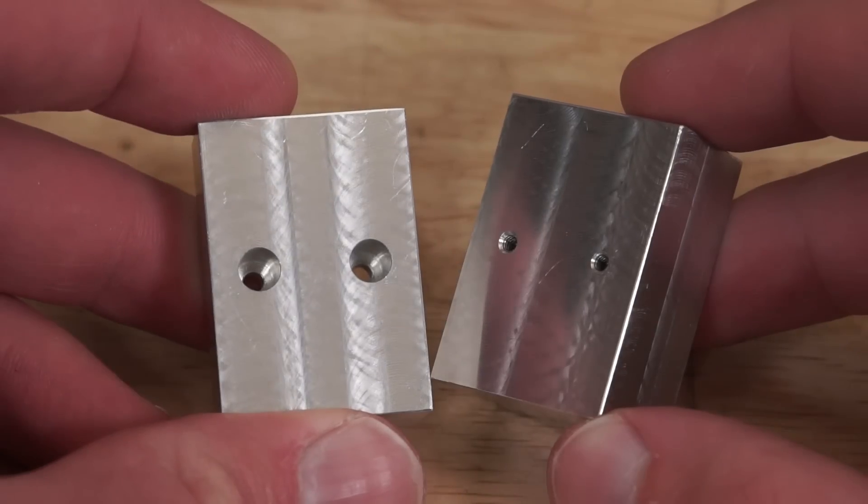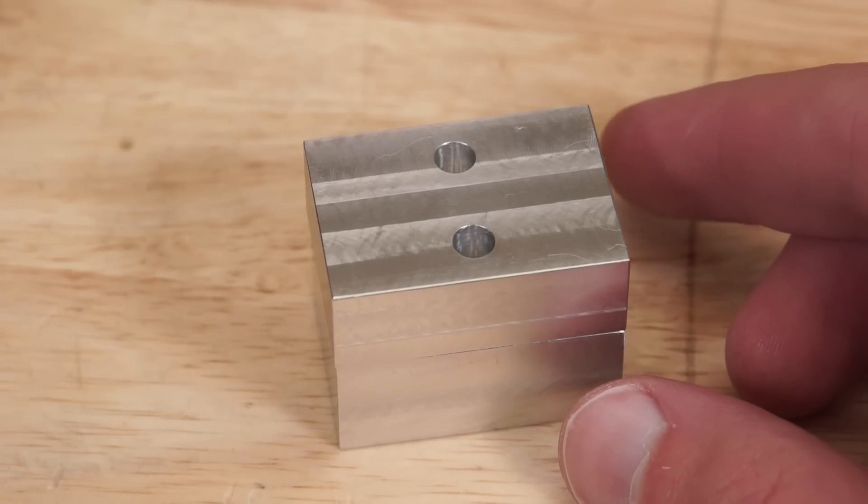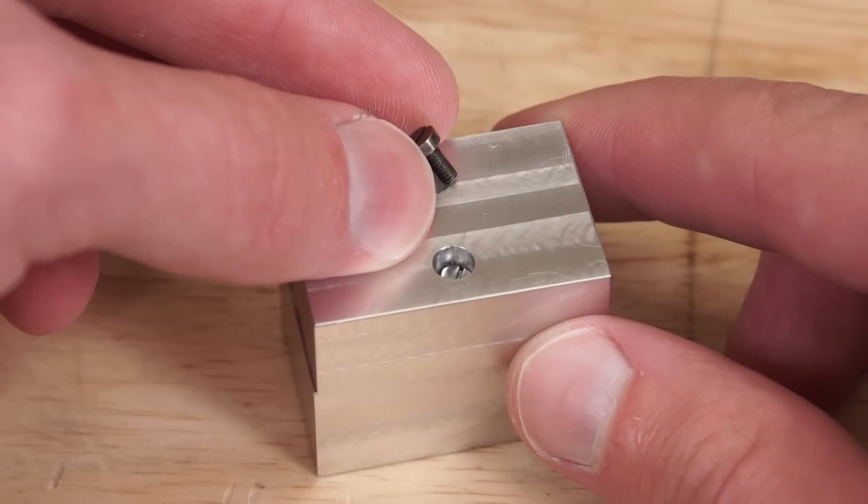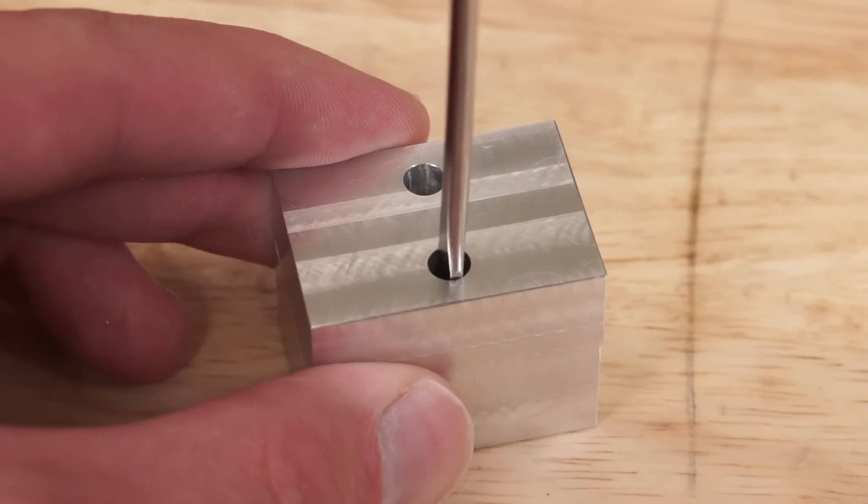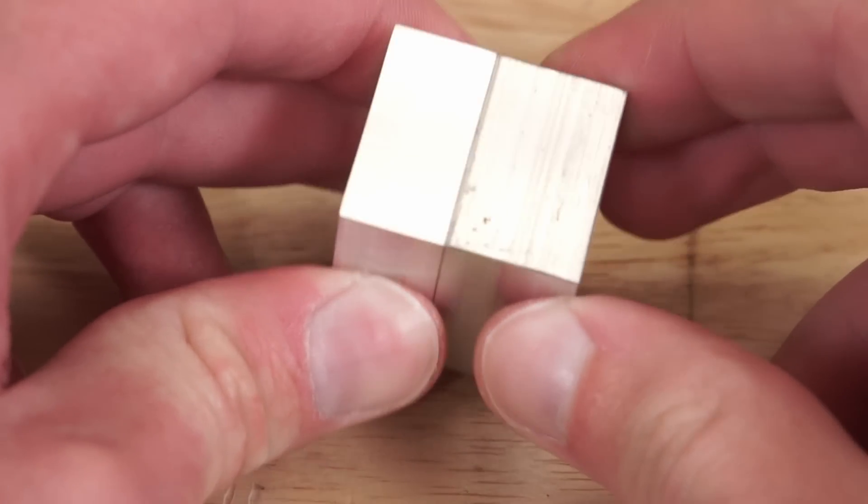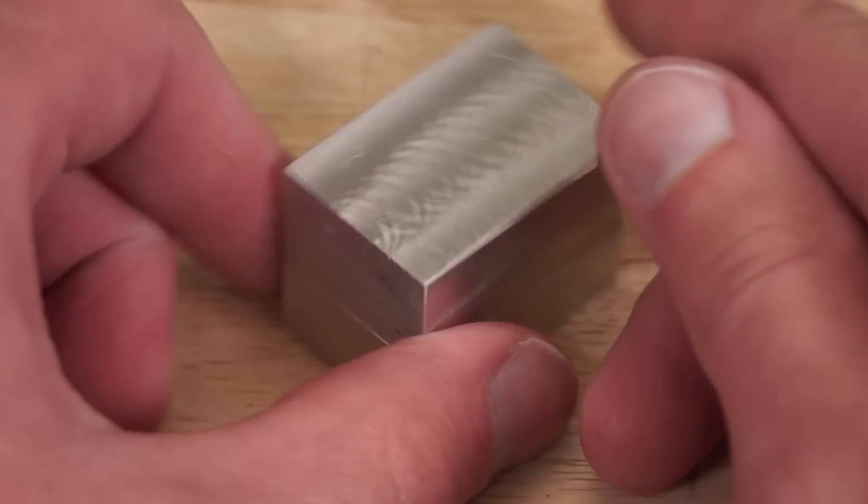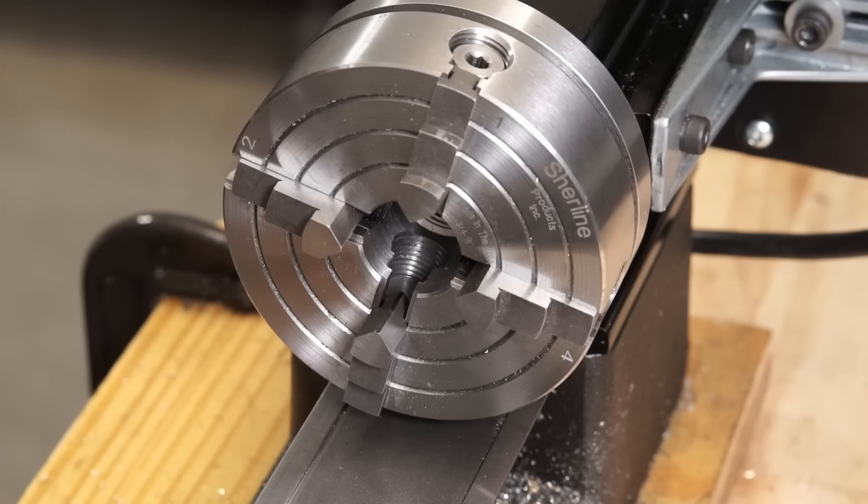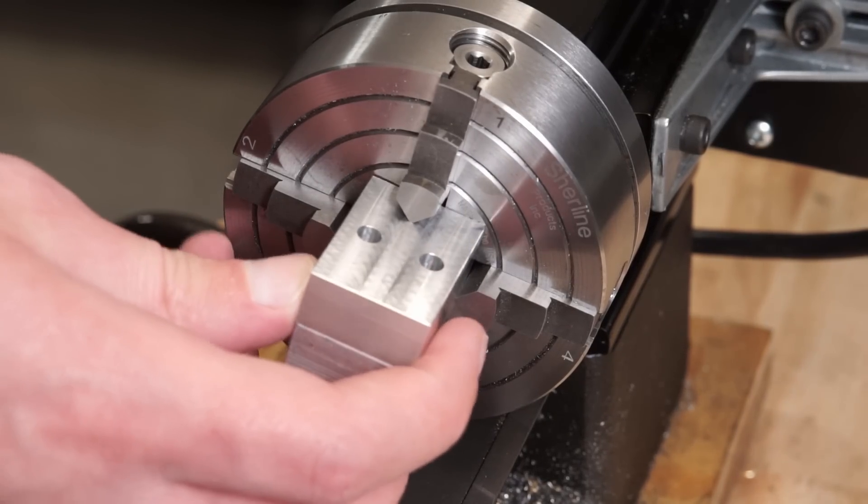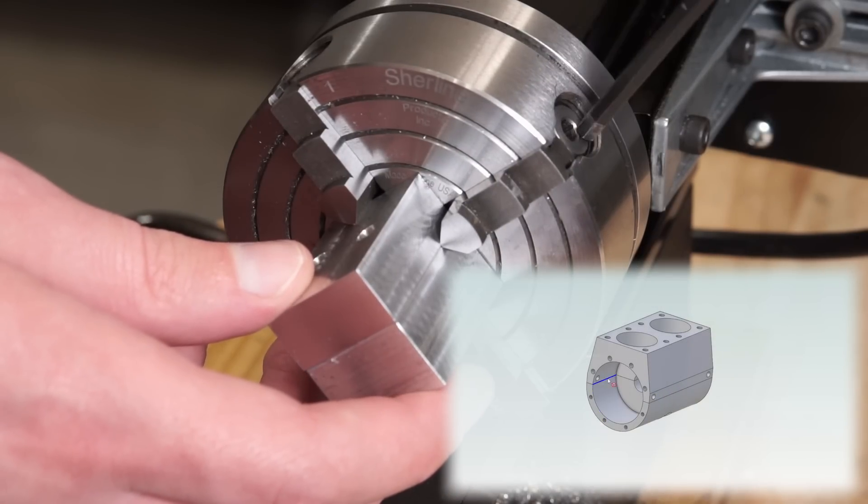I prepped a few blanks off camera just to save us a little time. These are 6061 aluminum. Our first stop is on the lathe to turn the main crankcase volumes.